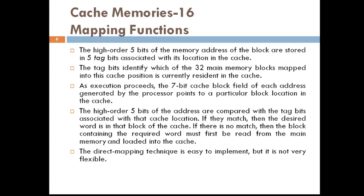If there is no match, the block containing the required word must first be read from the main memory and then loaded into the cache. The direct mapping technique is easy to implement, but it is not very flexible — this flexibility will be understood when we study the other mapping functions.